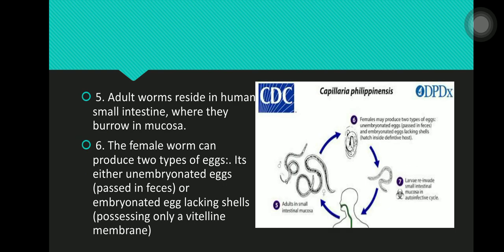In stage 5, the adult worms reside in the human small intestine where they burrow into the mucosa. The female worm can produce two types of eggs: either unembryonated eggs which pass in feces, or embryonated eggs lacking shells, possessing only a vitelline membrane.